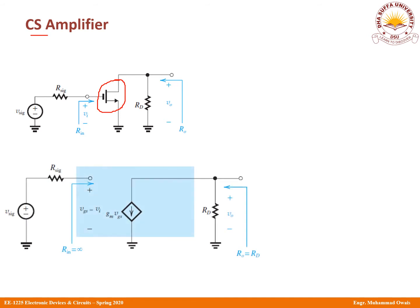We are not considering R0 at this moment. So what is your input resistance? There is no input resistance, which means input resistance is infinite. By the fact that there is no input resistance, I mean there is no external input resistor connected. So here you see the input resistance is infinity.